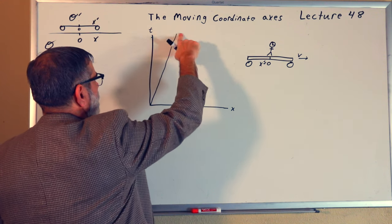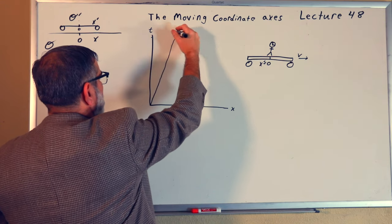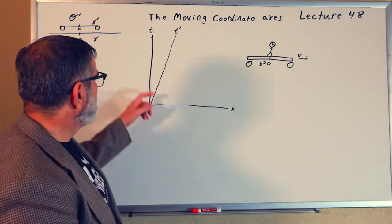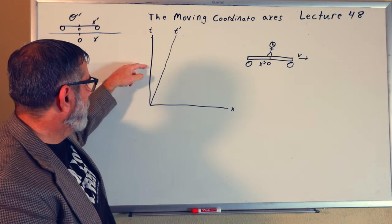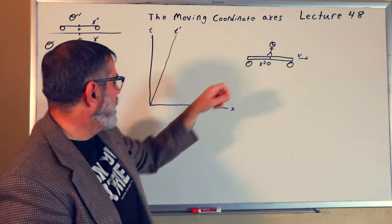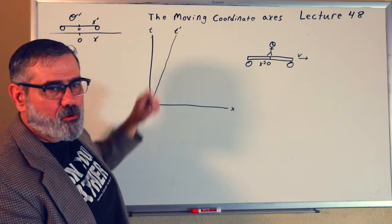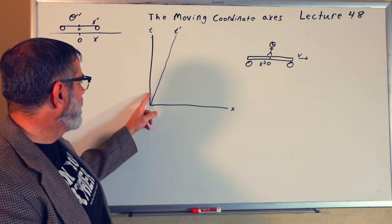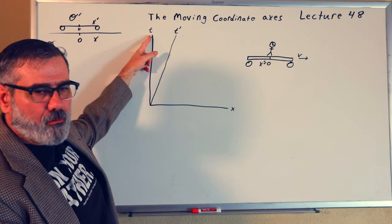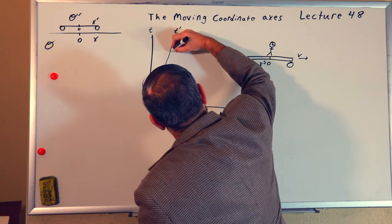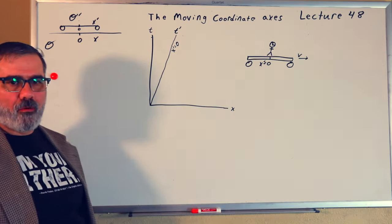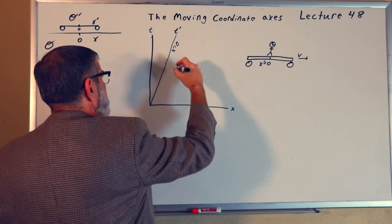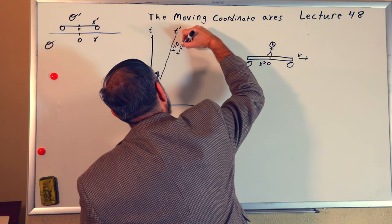We called it the world line. This is t prime — that is the world line of the origin. And the relationship between the velocity of the train and any point along this t prime axis is such that x is equal to v times t. That's how we got that world line. If I know the uniform relative velocity and multiply it by some value of t, that tells me where on x this is. The standard way to write it is x equals vt.